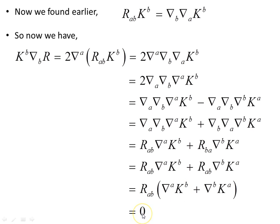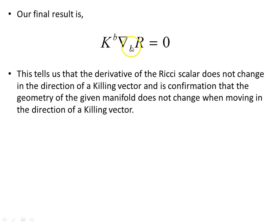This immediately tells us that this object — the derivative of the Ricci scalar in the direction of the Killing vector — is zero. Our final result is that the derivative of the Ricci scalar in the direction of any Killing vector is zero. This tells us that the Ricci scalar does not change in the direction of a Killing vector, confirming that the geometry of the manifold does not change when moving in the direction of a Killing vector — a very important result.